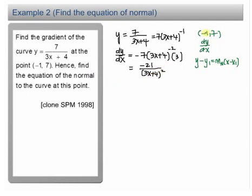The gradient at (-1, 7): we just substitute x equals negative 1 into dy/dx. dy/dx equals negative 21 over 3 times negative 1, you have negative 3 plus 4, holding square. So your gradient is negative 21. Remember the gradient actually is dy/dx.